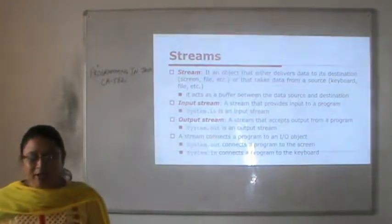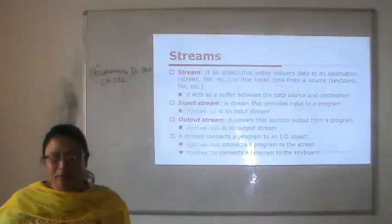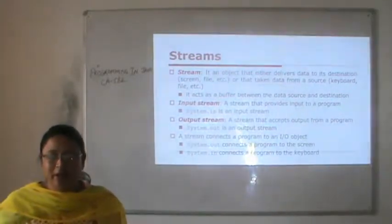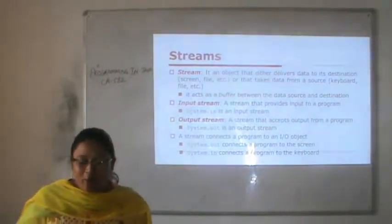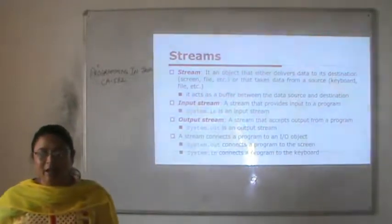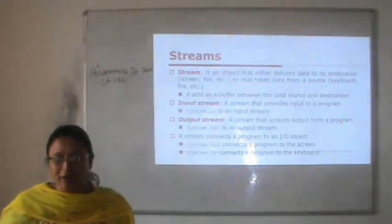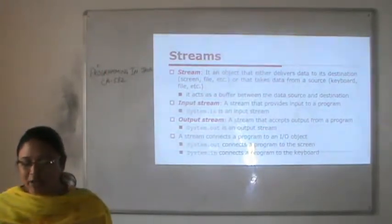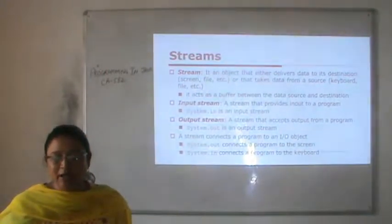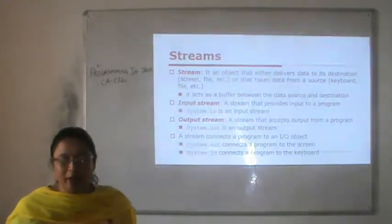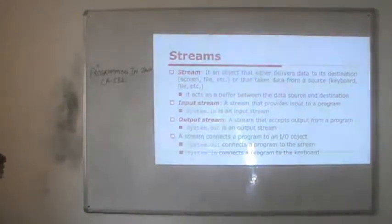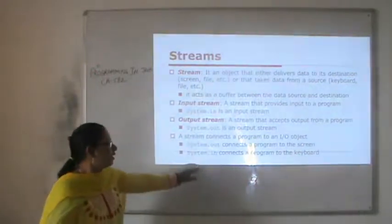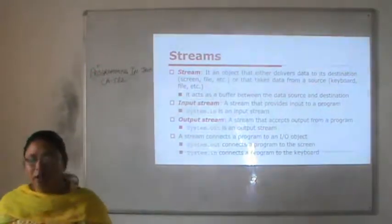What is the input stream? It is a stream that provides input to a program. For example, we have already used system.in — it is an input stream. The output stream is the stream that accepts output from a program, and we have already used system.out as an output stream. A stream connects a program to an input-output object: system.out connects a program to the screen, and system.in connects a program to the keyboard.